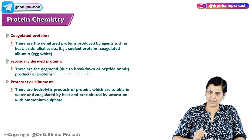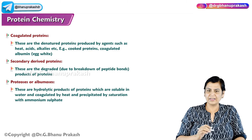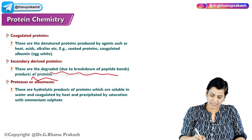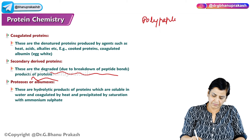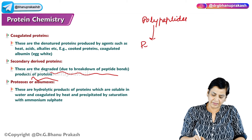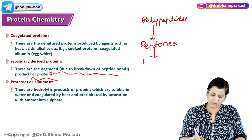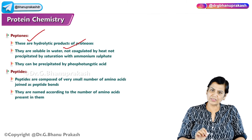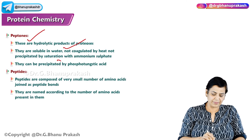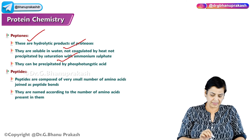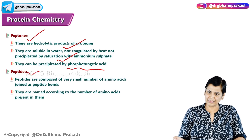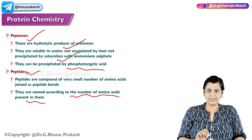Secondary derived proteins are further breakdown products. These include peptones and dipeptides, and finally amino acids. They are defined as degraded products of proteins. Polypeptides are degraded into peptones, then peptones into dipeptides, and then into amino acids. Peptones are hydrolytic products of proteoses — soluble, not coagulated by heat, and not precipitated with ammonium sulfate, but can be precipitated by phosphotungstate. Peptides are composed of a very small number of amino acids and named according to the number of amino acids present.